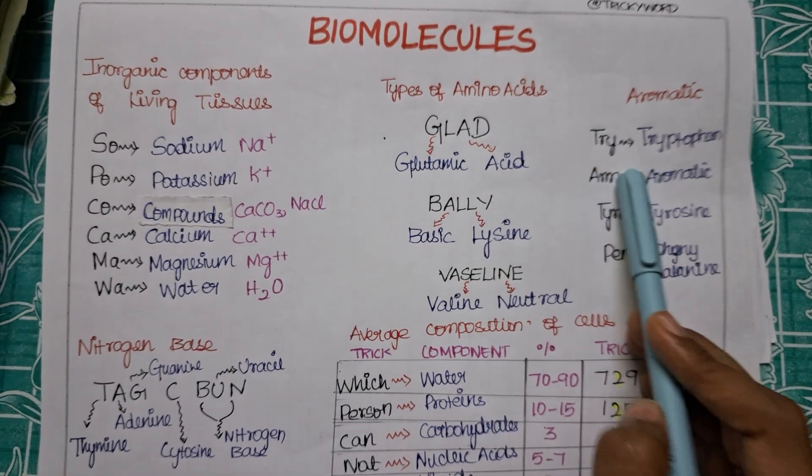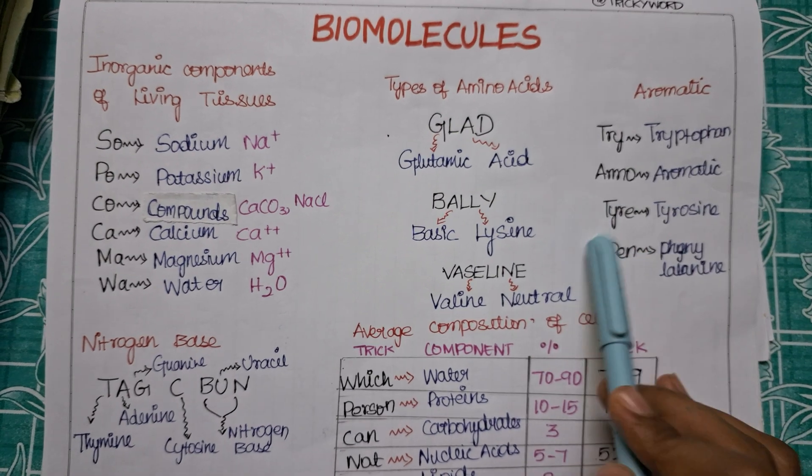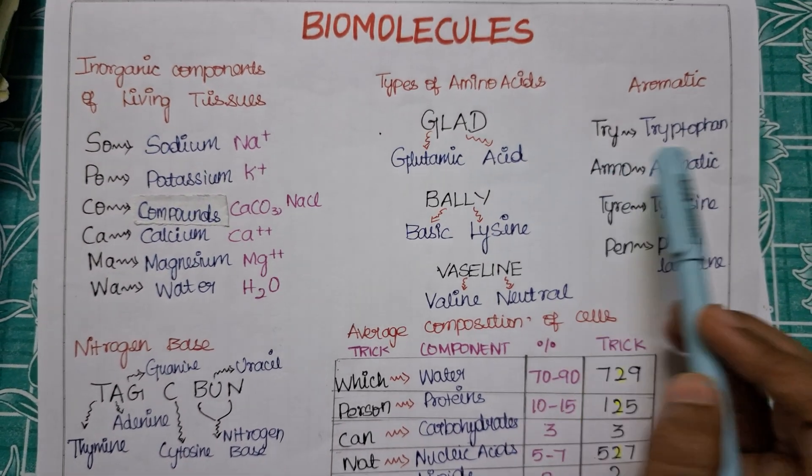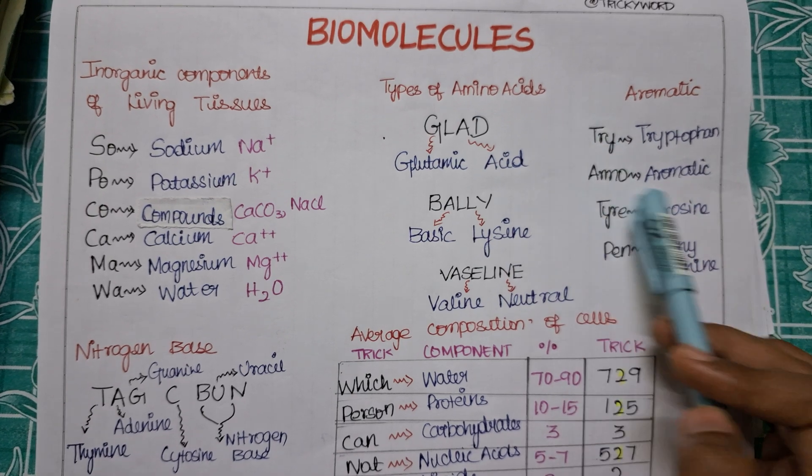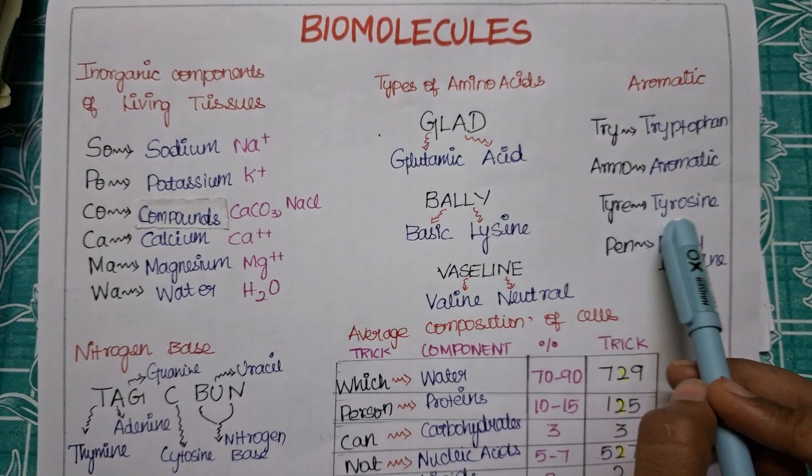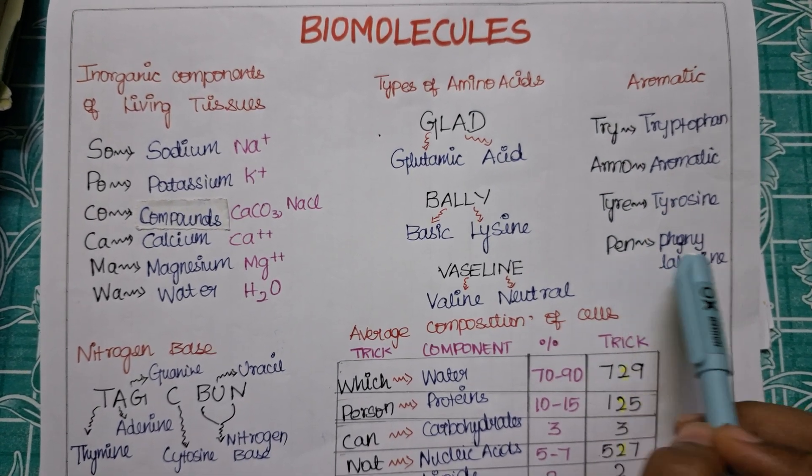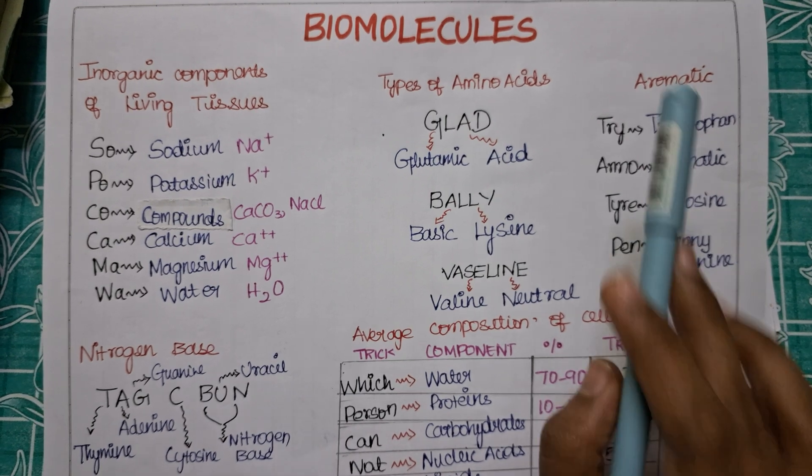Your friend is saying try aroma tire pen. So TRY is for your tryptophan and AROMA is for the aromatic acid. Now TIRE is for your tyrosine, PEN is for phenylalanine. Any doubt in this?